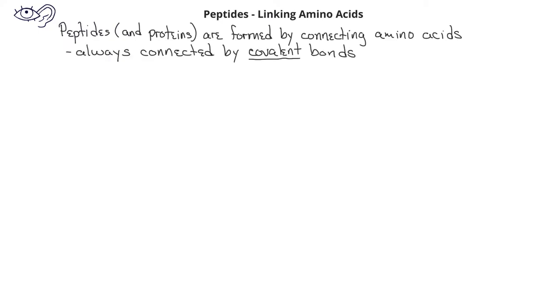In previous videos, we mentioned that amino acids can be connected to other amino acids. When amino acids are joined together, this only takes place through covalent bonds that link amino acid units.